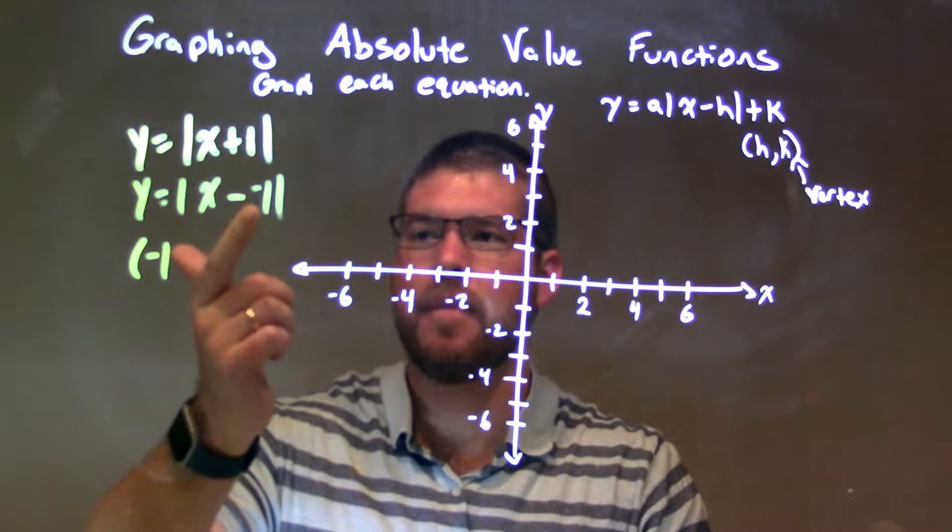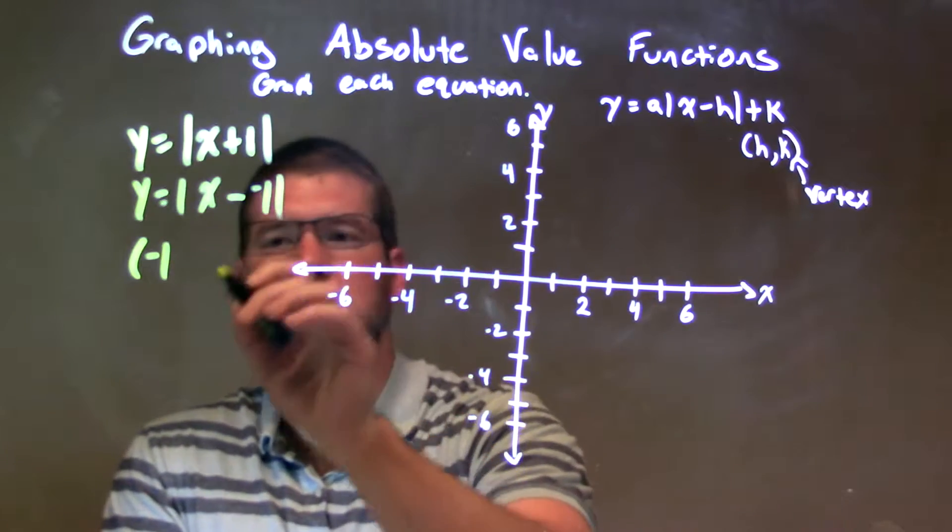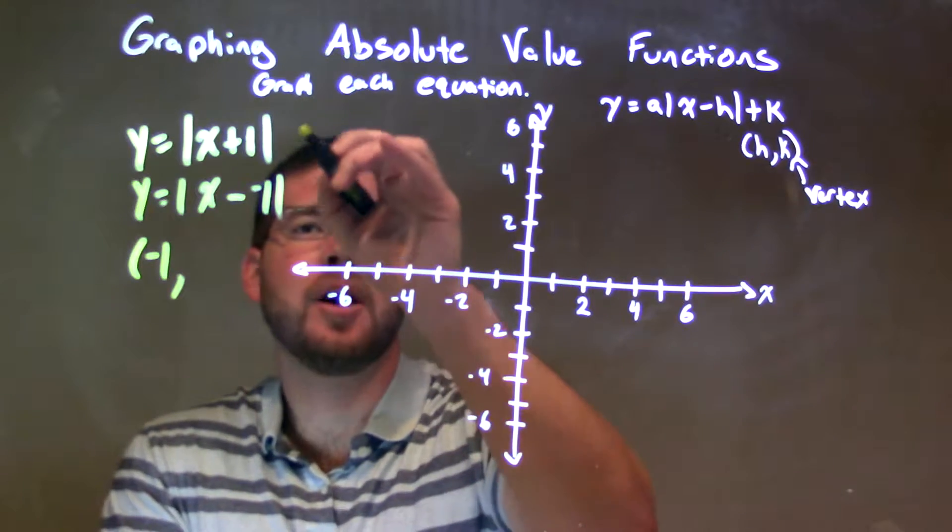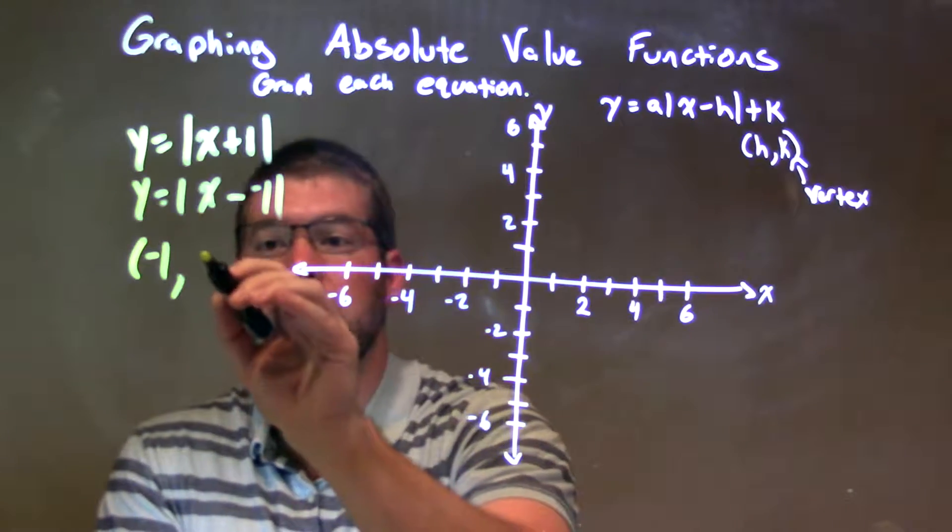x plus 1 is the same thing as x minus negative 1. So h is negative 1 here, and our k value is not given. There's nothing there, so it's 0.